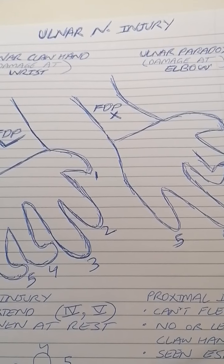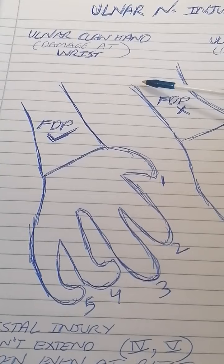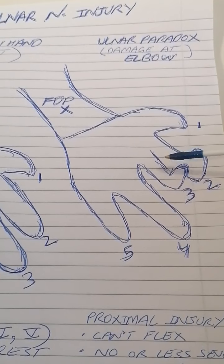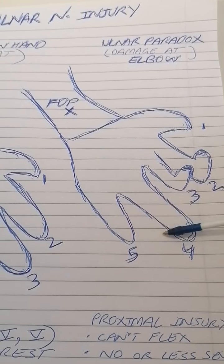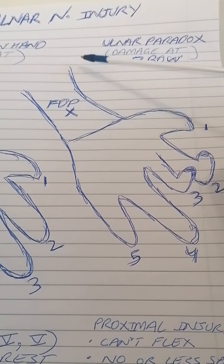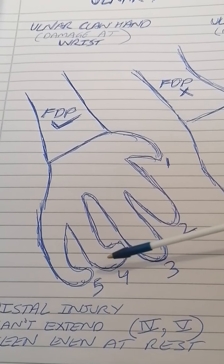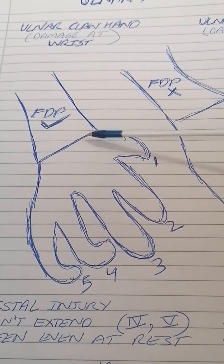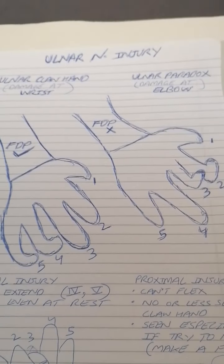The main difference: ulnar paradox — ask the patient to make a fist; they cannot flex the fourth and fifth fingers because FDPs are damaged, meaning the injury is proximal near the elbow. Ulnar claw hand — even at rest, those two fingers are flexed, because the injury is at the wrist and FDPs remain intact. That's all. Thank you.